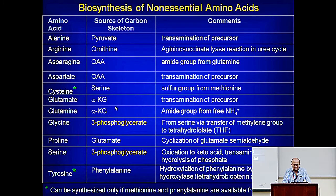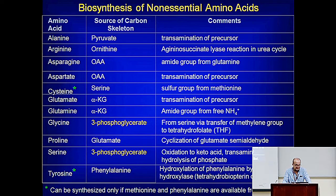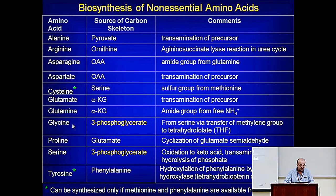Glutamate is made from alpha-ketoglutarate, either by transamination or glutamate dehydrogenase. Glutamine is made by glutamine synthase, which adds ammonia to glutamate to form glutamine. Remember, glutamine is a key way to transport ammonia from peripheral tissues back to the liver or the kidney.